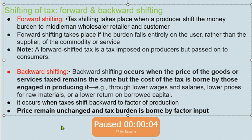I am going to discuss an important topic: forward and backward shifting of taxation. Forward shifting is the process when a producer shifts the tax burden to the middleman, wholesaler, retailer, and customer. Forward shifting takes place when the burden falls entirely on the user rather than the supplier or producer of the commodity or services.